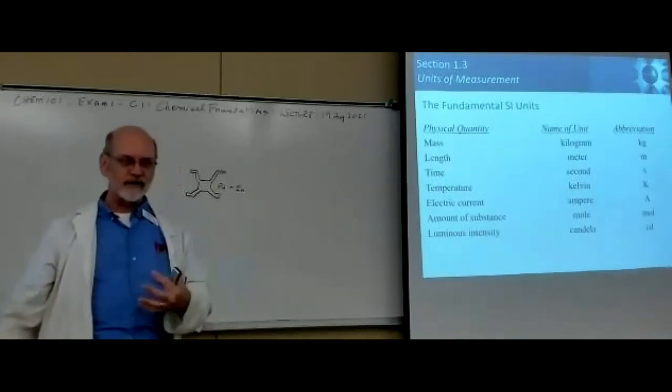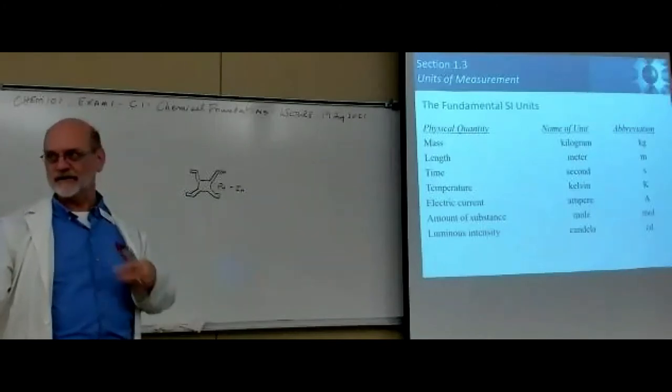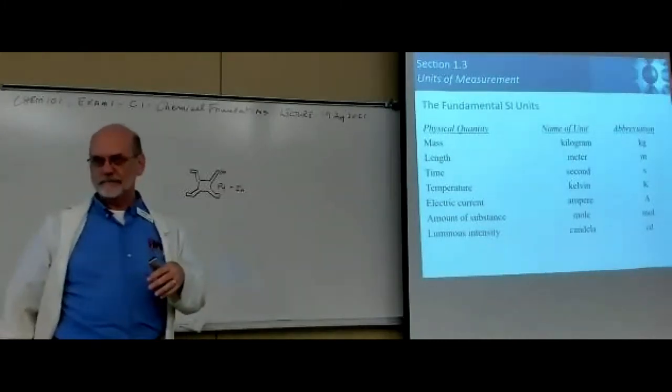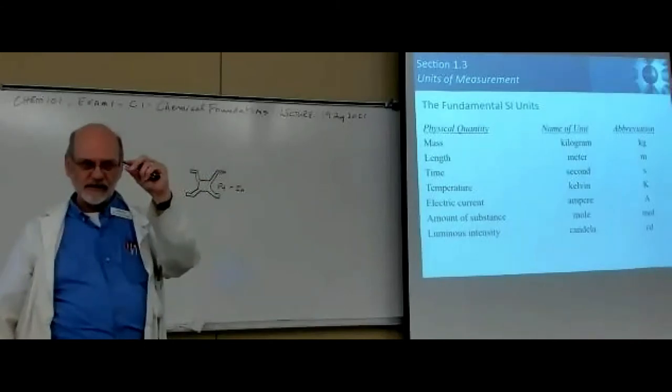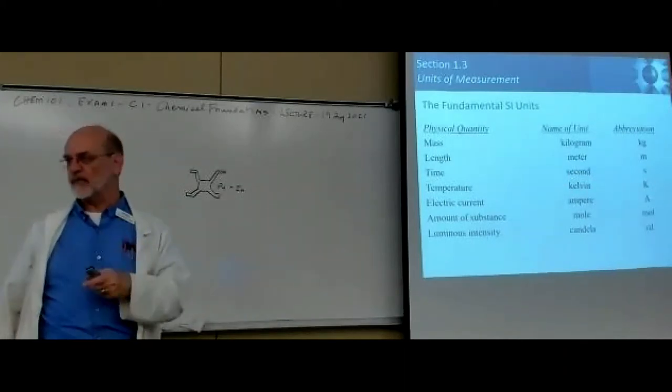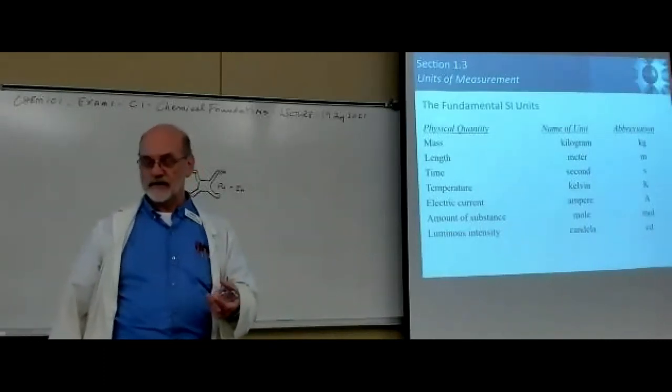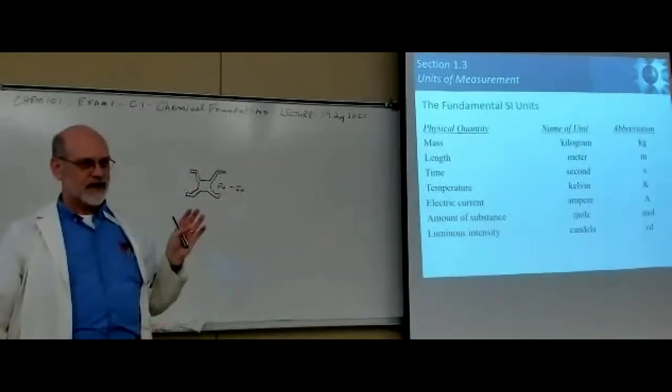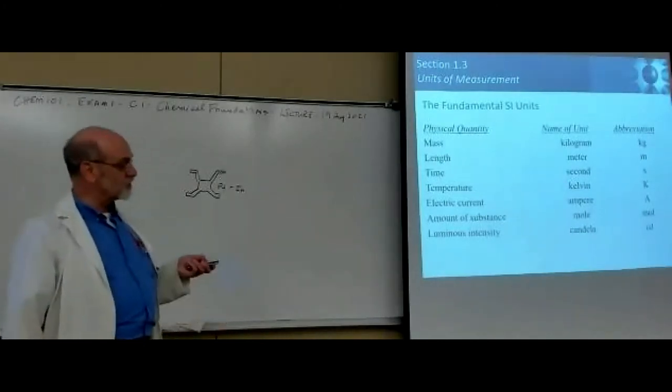And then temperature. We know Fahrenheit, we know intuitively what Fahrenheit feels like. Maybe 75 degrees outside, or 15 below. But scientists use Celsius. It's a different system of measuring temperature. The size of the degree in Celsius is exactly the same size as in Kelvin. The difference is where's the zero point?